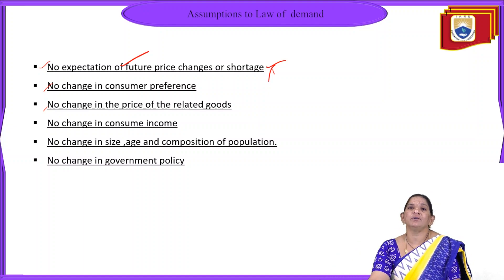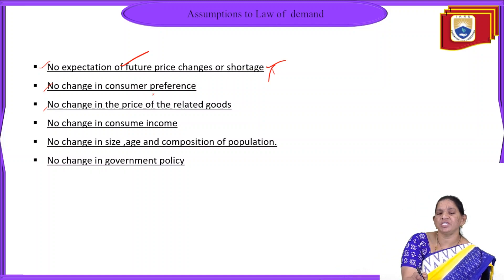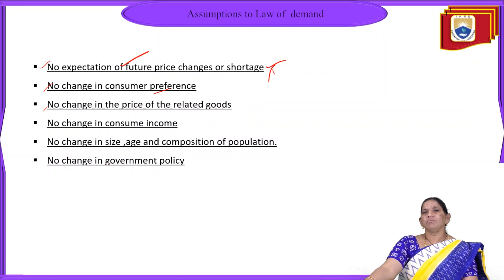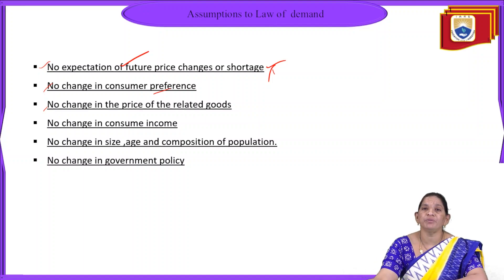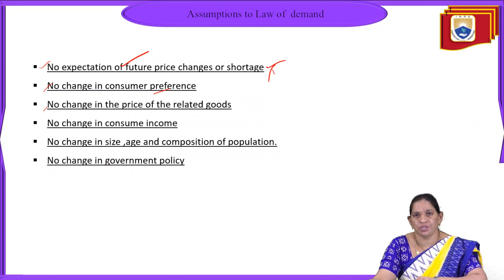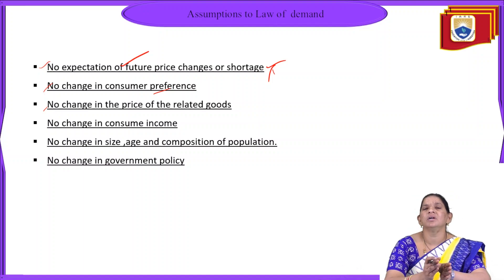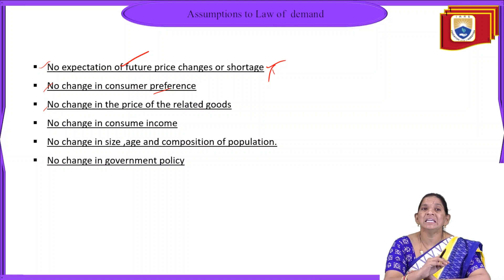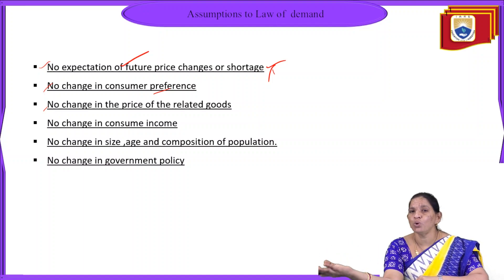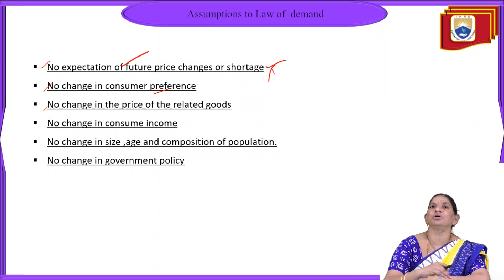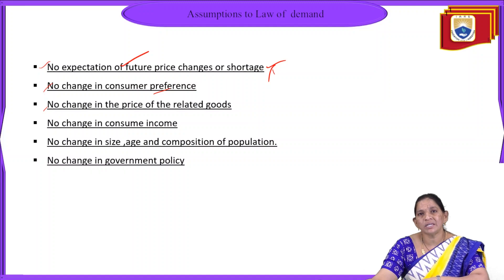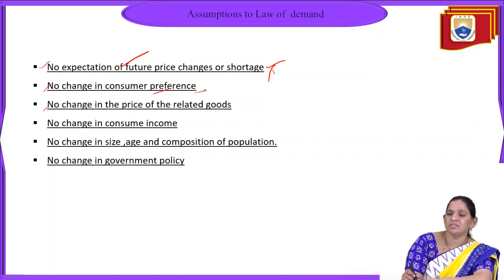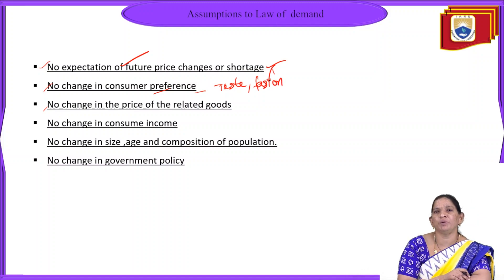Another assumption is that there should be no change in consumer preferences — meaning the taste of the consumer should remain constant. When a consumer wants to purchase a particular product, he should stick to that product. If he gets an option with a lesser price and more quantity from an alternative product, he will shift to that product. So when applying the law of demand, consumer preferences, tastes, and fashions must not change — these must remain constant.